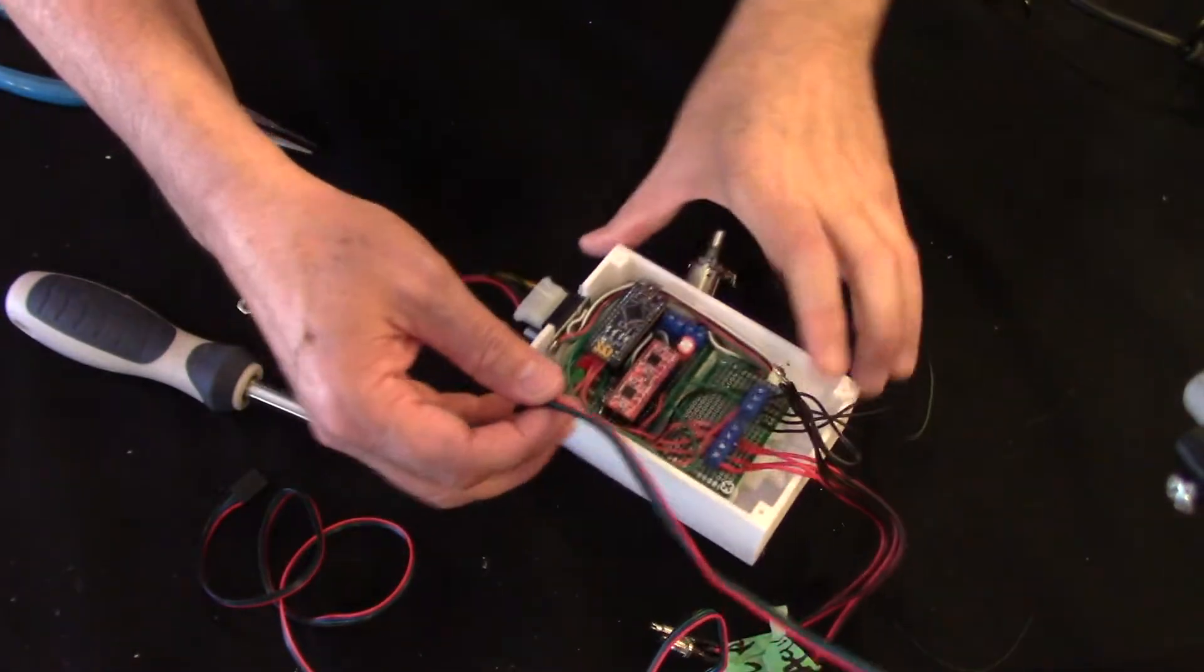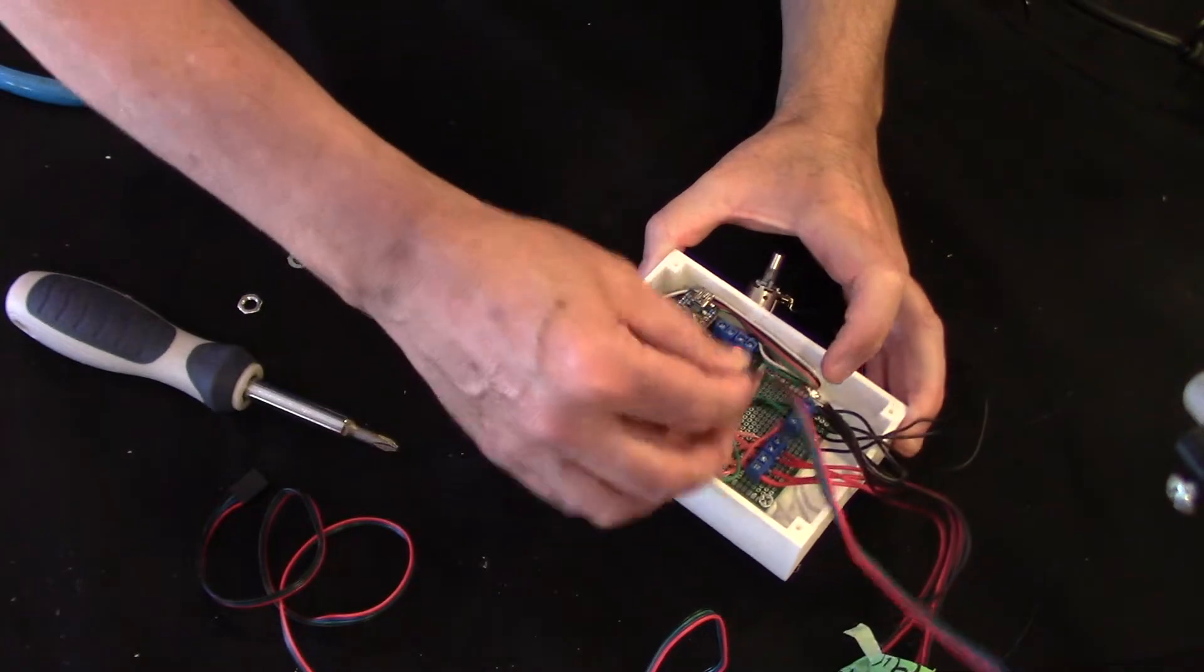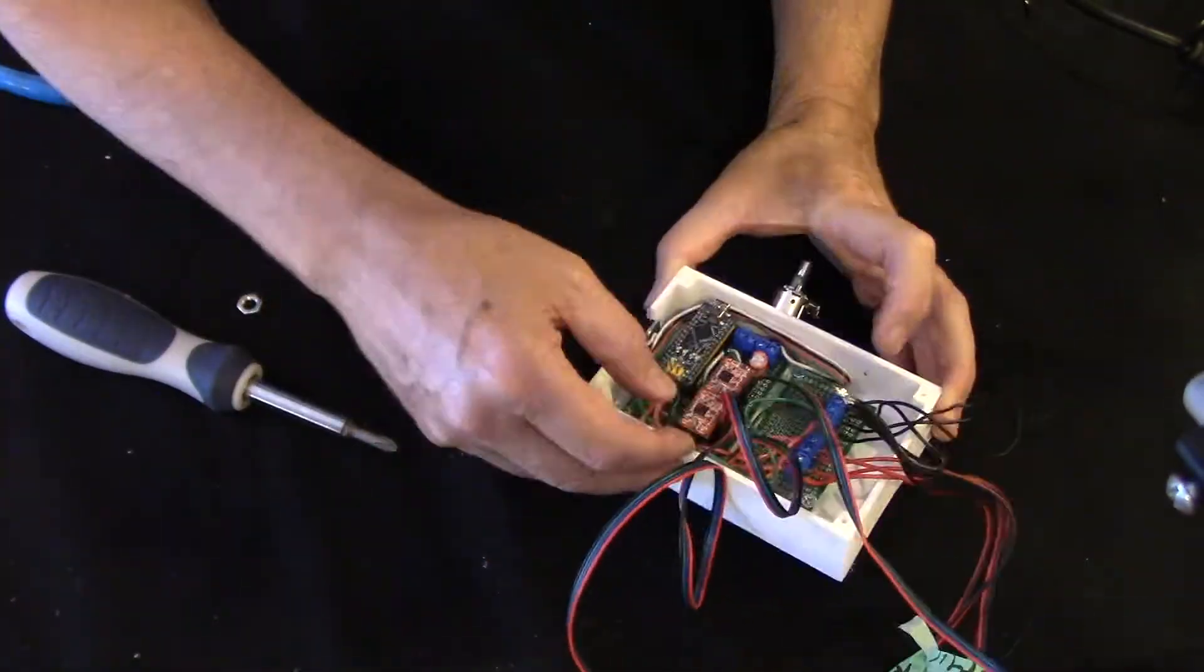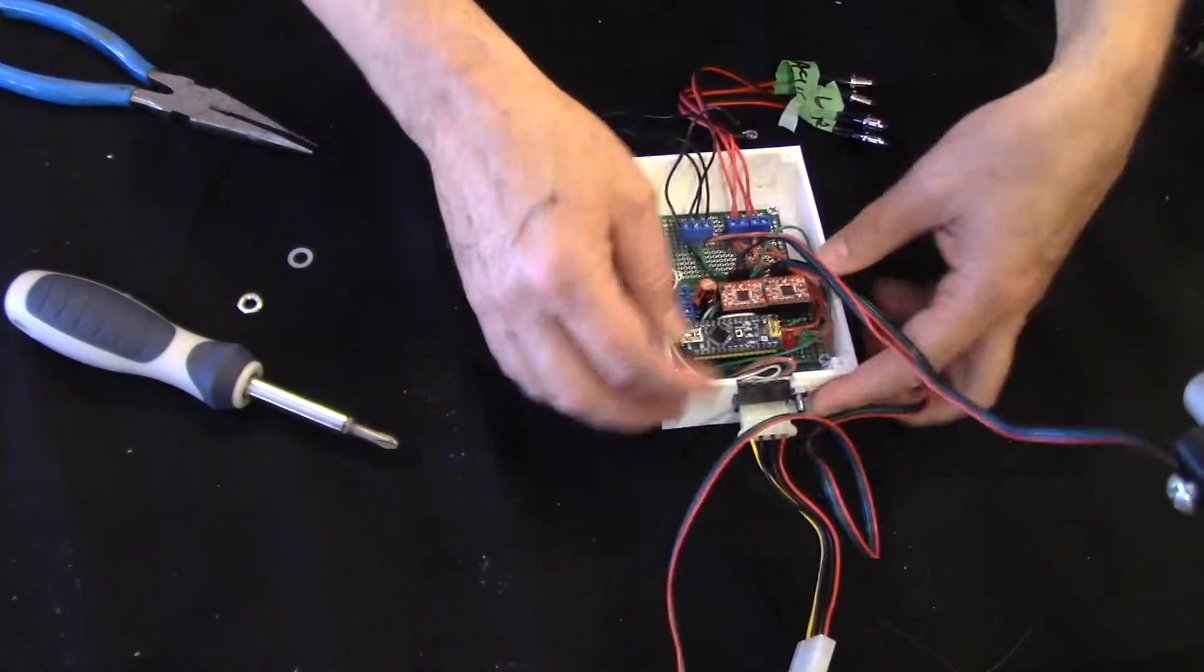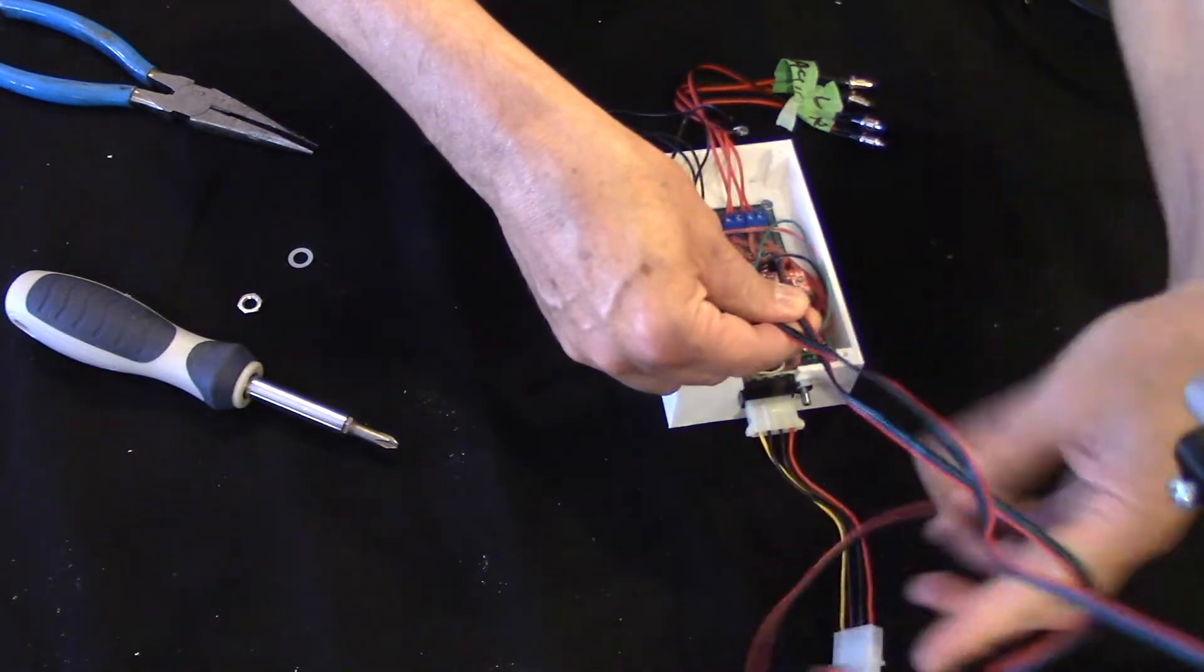Okay, the next step here is going to be to mount the ribbons going to the motors. Okay, and then very carefully route them right through this slot.